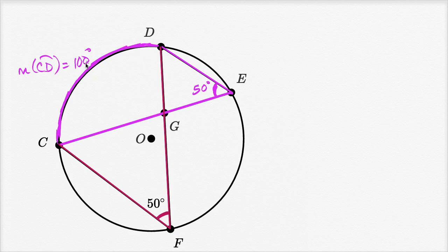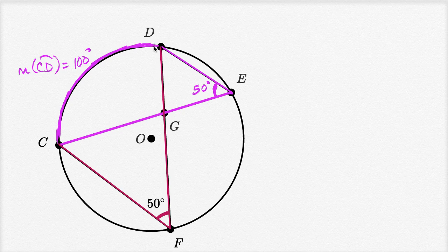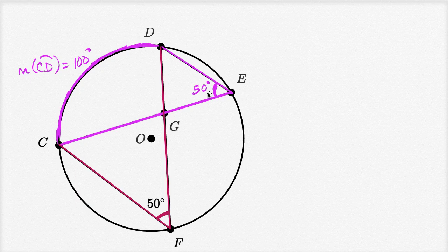And then you use that and you say, well, if the measure of that arc is 100 degrees, then an inscribed angle that intercepts it is going to have half its measure. It's going to be 50 degrees. So either way, we get to 50 degrees.